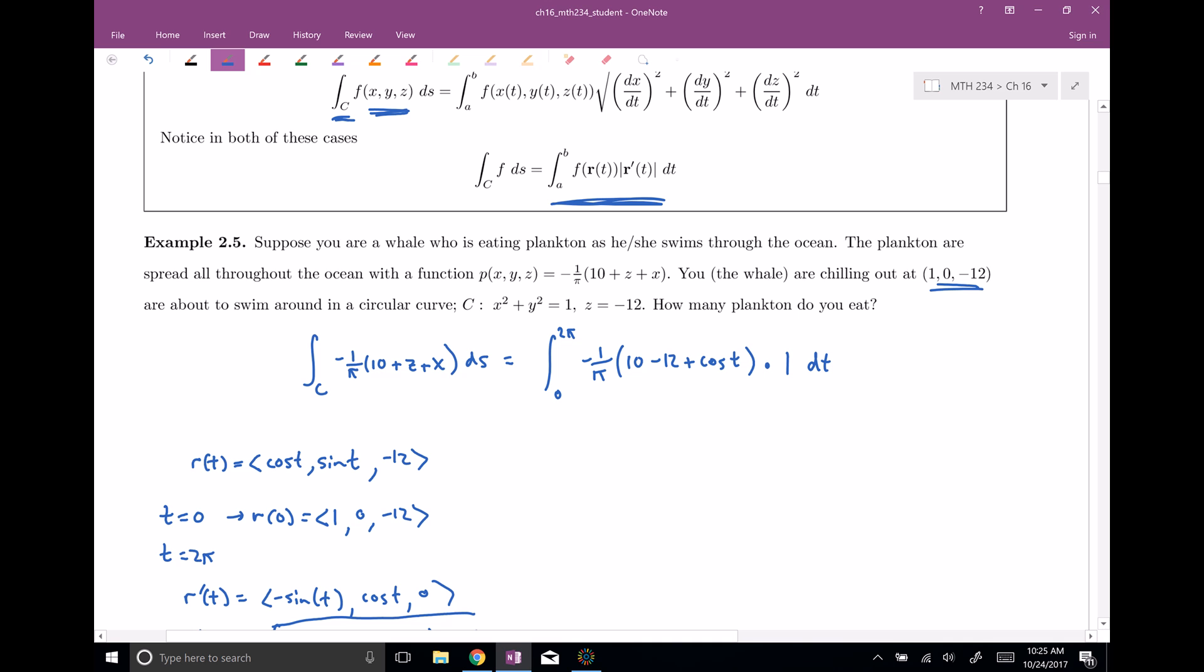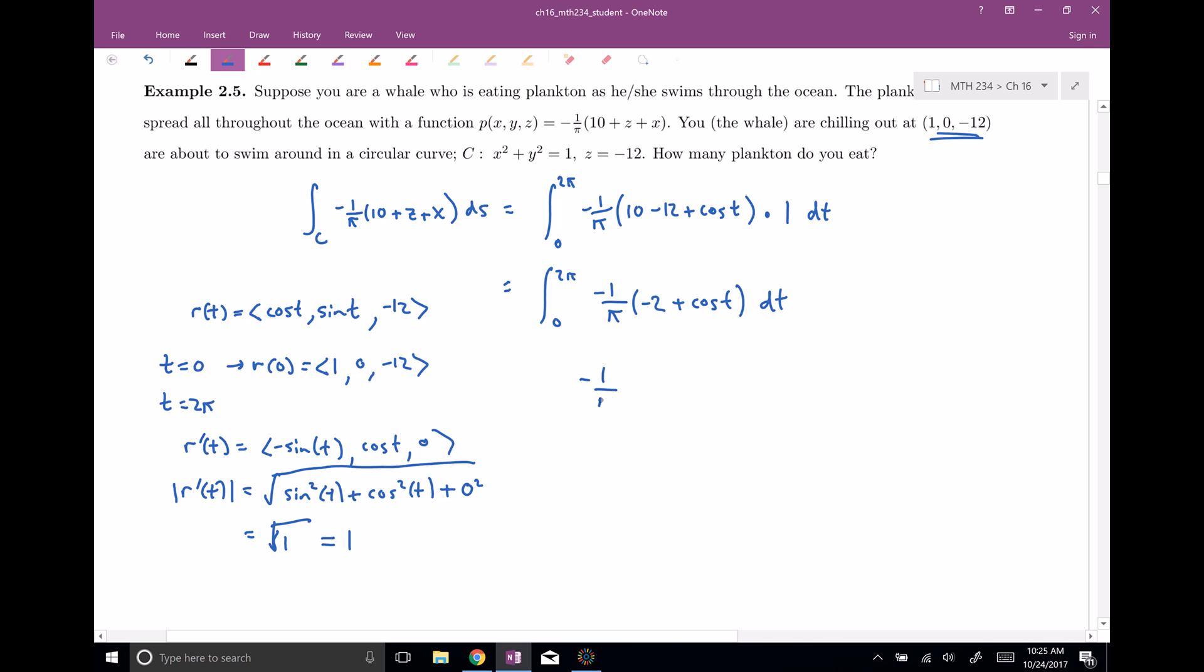All right, so let's go ahead and simplify this a little bit. And then we can integrate. All right, so from zero to two pi, let's see, 10 minus 12, that's gonna be negative two. And let's see, plus cosine of t, dt. Now let's go ahead and integrate. This is just a constant, it's along for the ride. And when I integrate negative two, I get negative two t. And when I integrate cosine, I get sine.